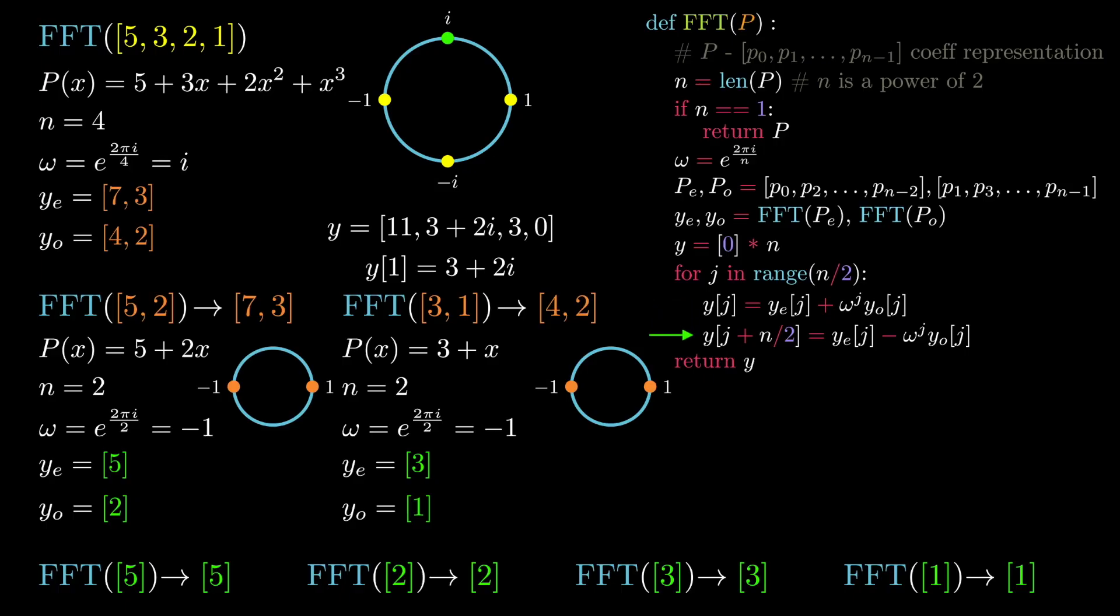In the second line of the for loop, we now assign the third index of y to be the first index of ye minus omega to the power of 1 times index 1 of yo, which evaluates the final root of unity. When evaluated, this ends up being the complex number 3 - 2i, which is the final element in our output list y.